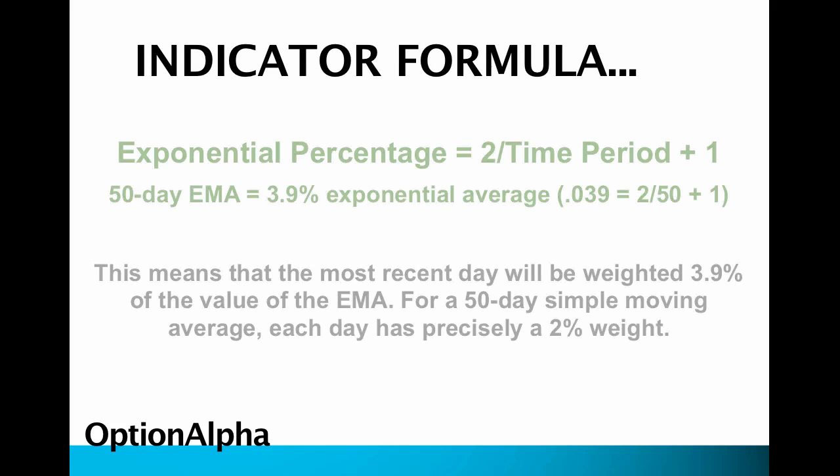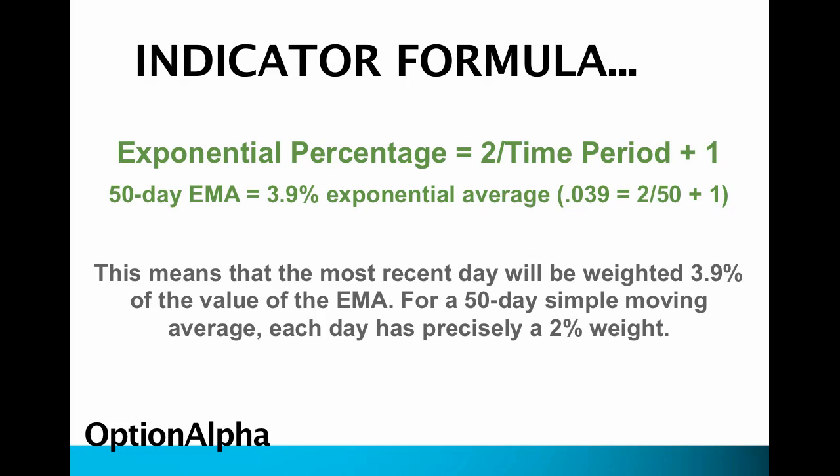Let's look at the indicator formula so you understand how it works. The Exponential percentage is going to be 2 divided by the time period plus 1, and that's going to be weighted much higher. So on a 50-day moving average, the exponential percentage would be 2 divided by 50 plus 1, which gives us 0.039, or 3.9%.